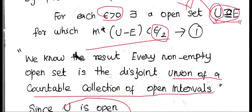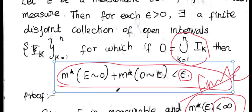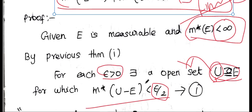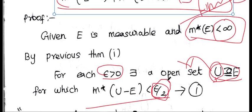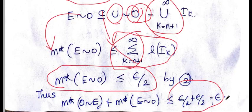So that completes the proof. For each positive epsilon, since epsilon by 2 is also positive, we can apply the argument without loss of generality. This concludes the proof of the theorem.